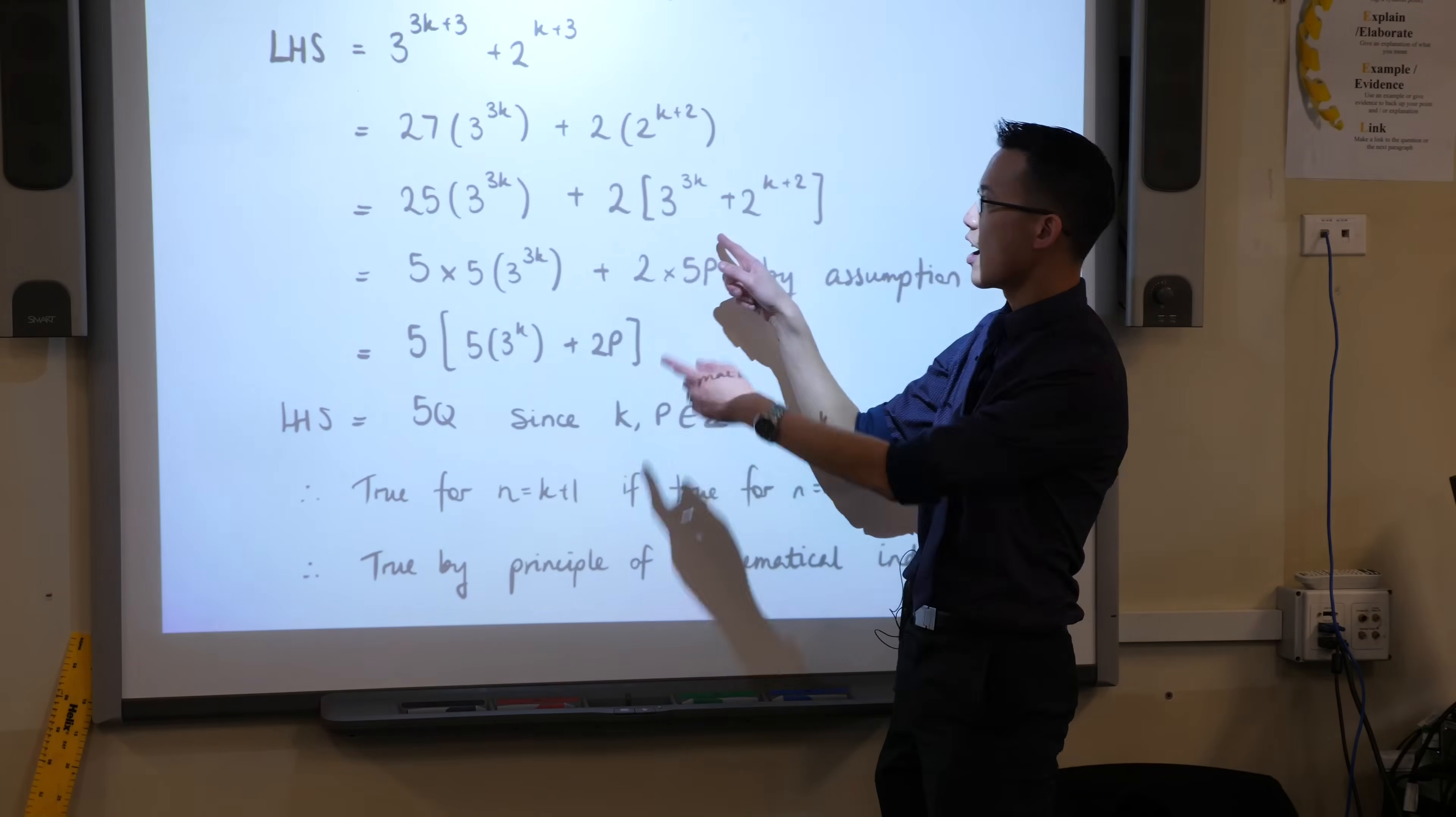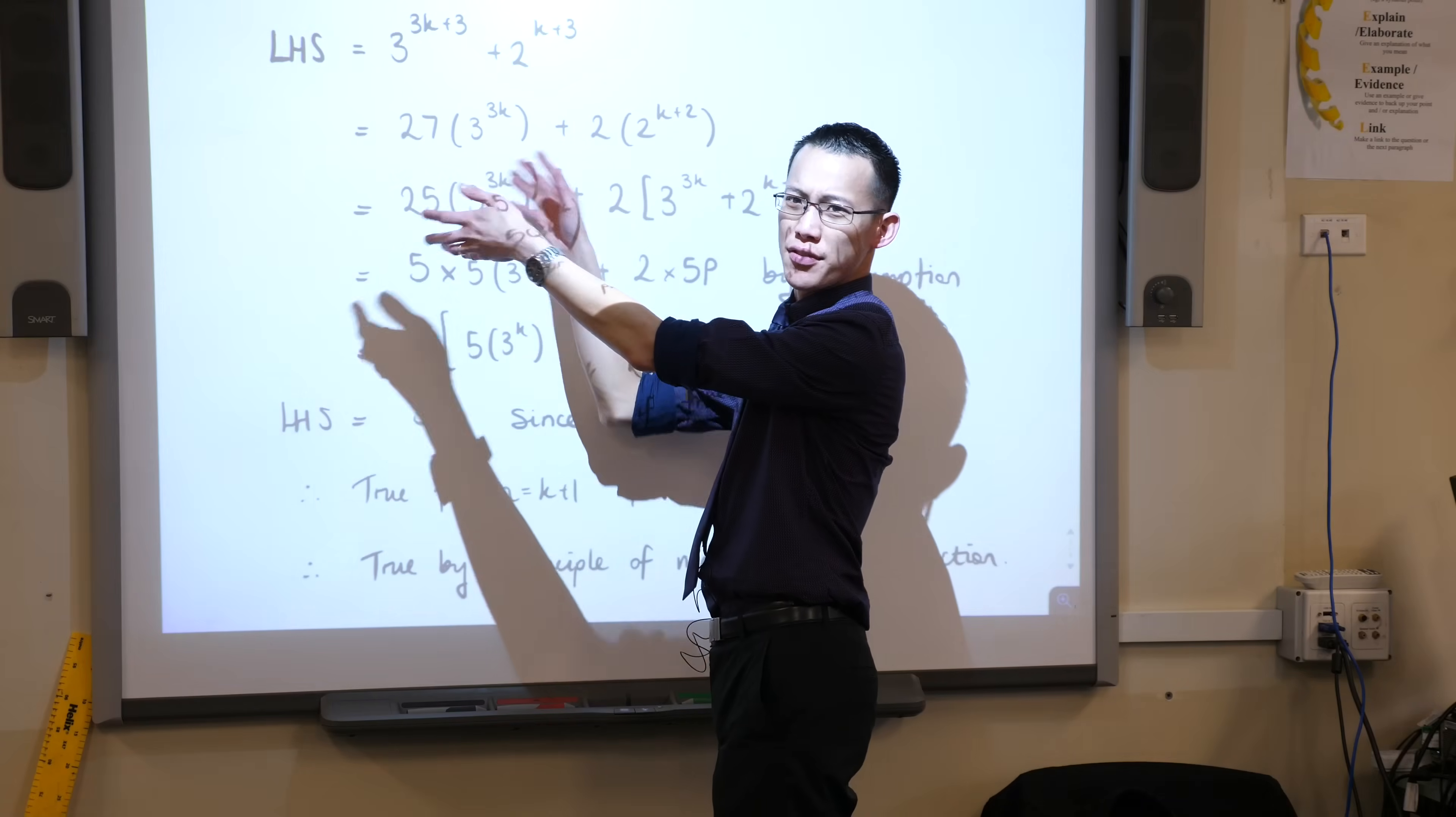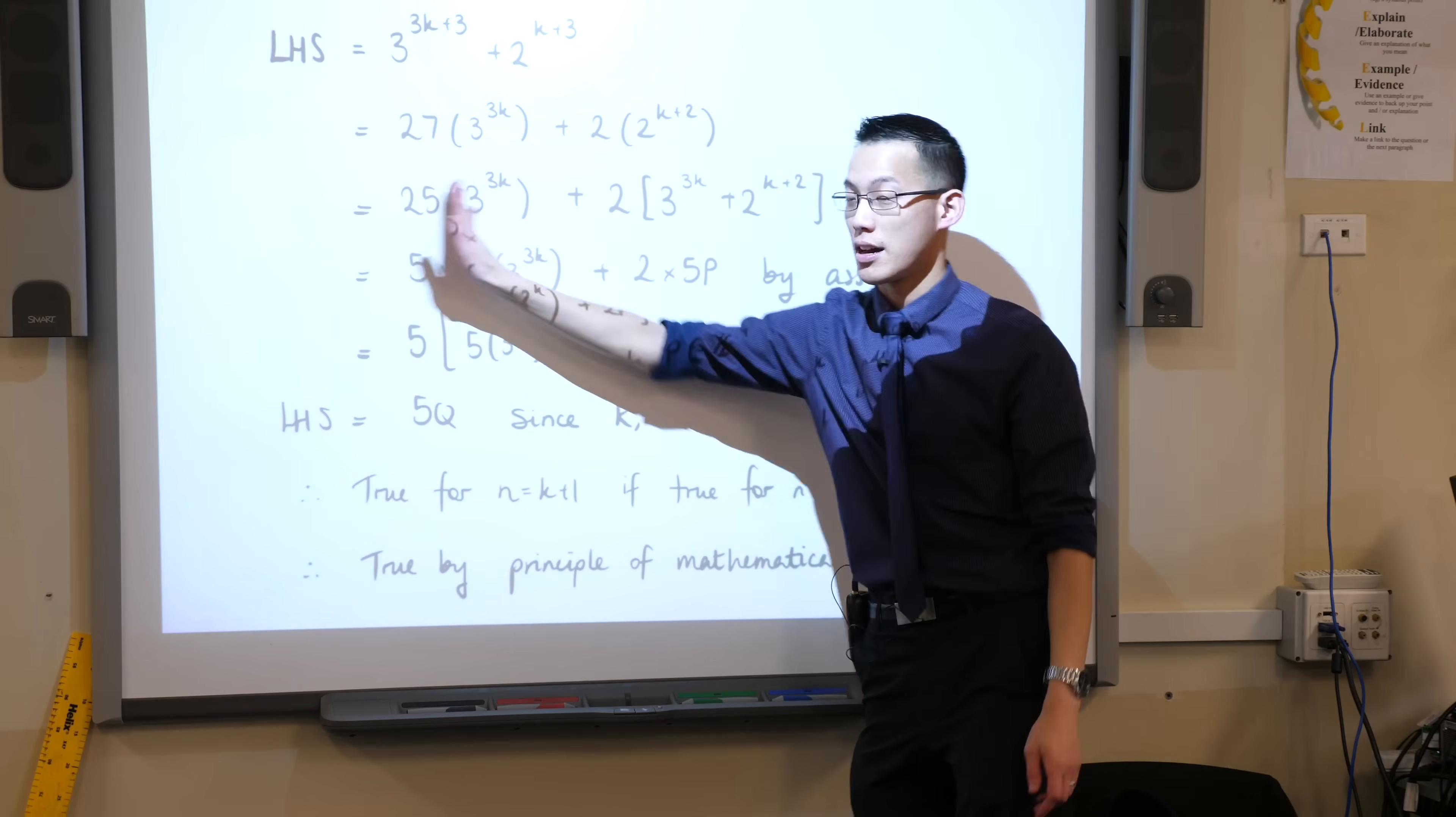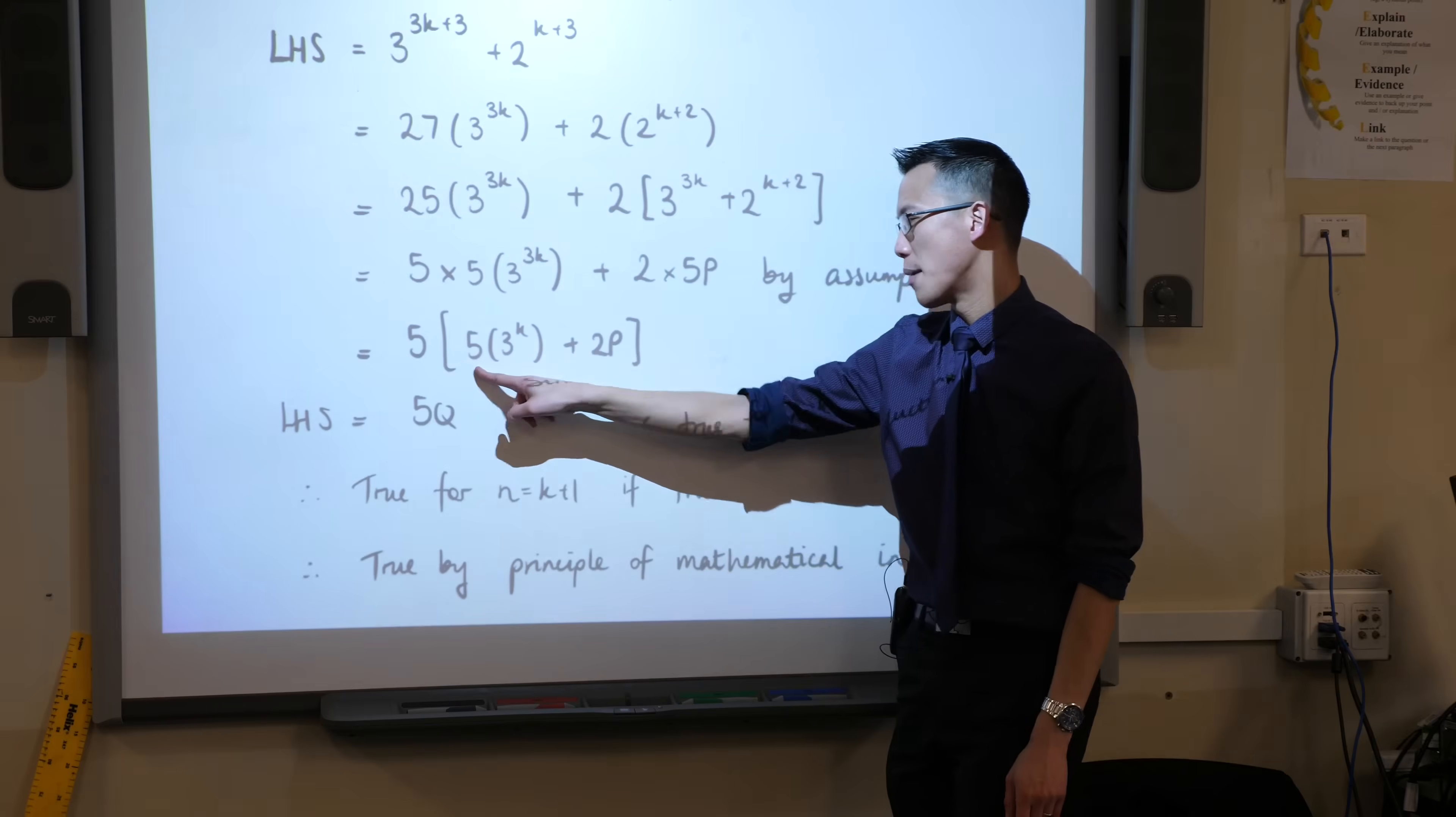Once you've done that, you can say, oh look, now I can group together a few of them that are in the assumption, and then I've got 25 of them left over there. But because I'm trying to prove that it's a multiple of 5, a multiple of 25 is totally okay. It's a multiple of 5, so that guy's sorted, and I just have to deal with this guy. You can see the factorization here, you've got 5 times something.